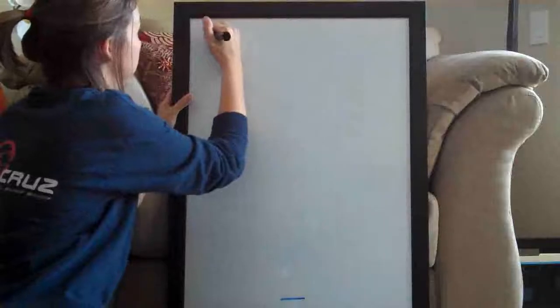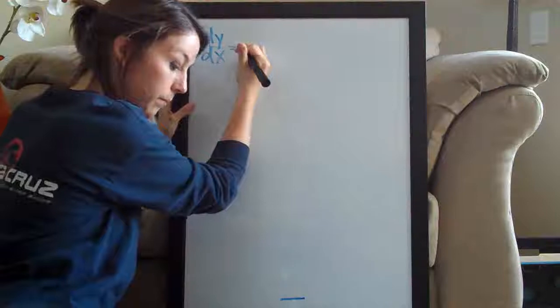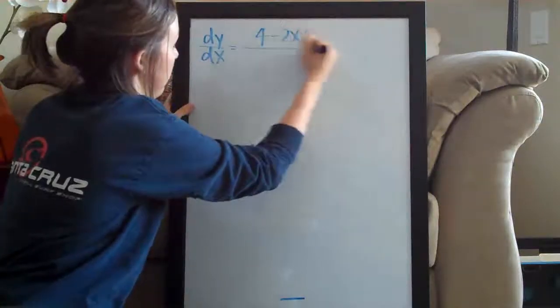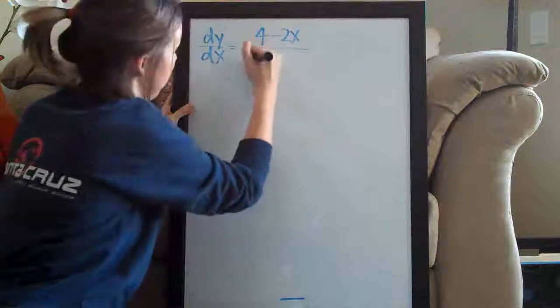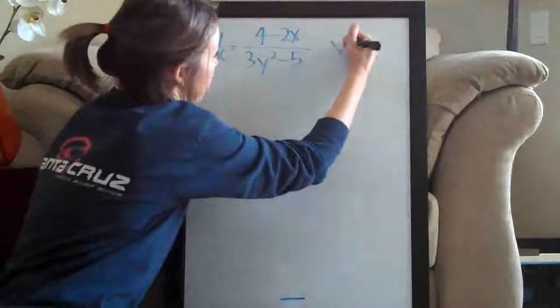This one is dy over dx equals 4 minus 2x over 3y squared minus 5 and they give us an initial condition.